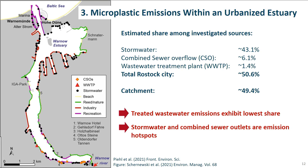Another interesting result of the study was that about 50% of emissions came from each — the city and the Warnow catchment area — while both having the same number of inhabitants. This could indicate that retention within the river played only a minor role in this study, considering the investigated timescale of one year.